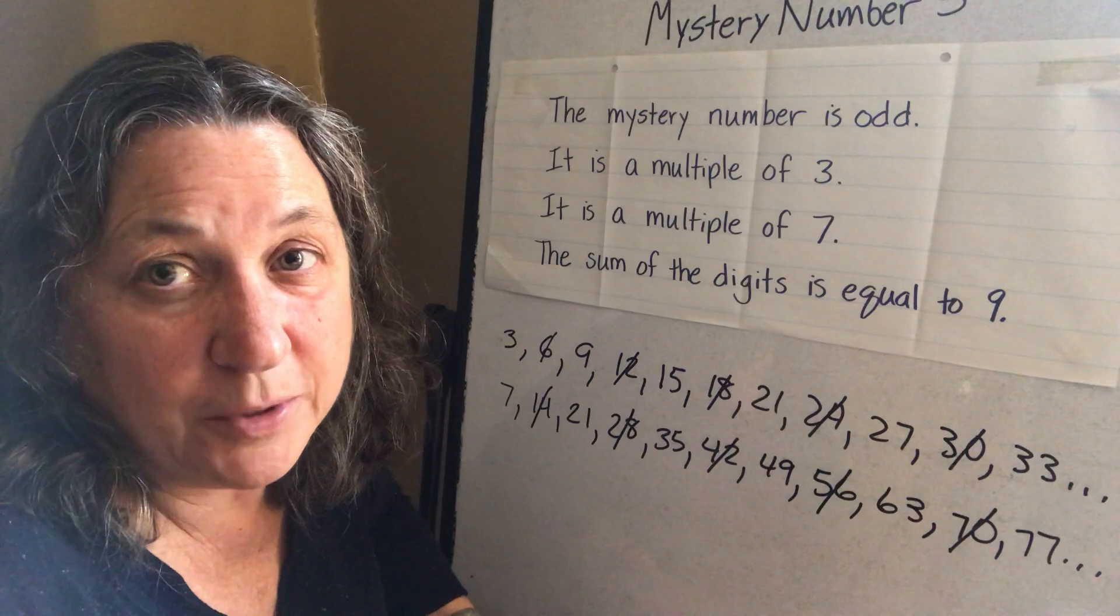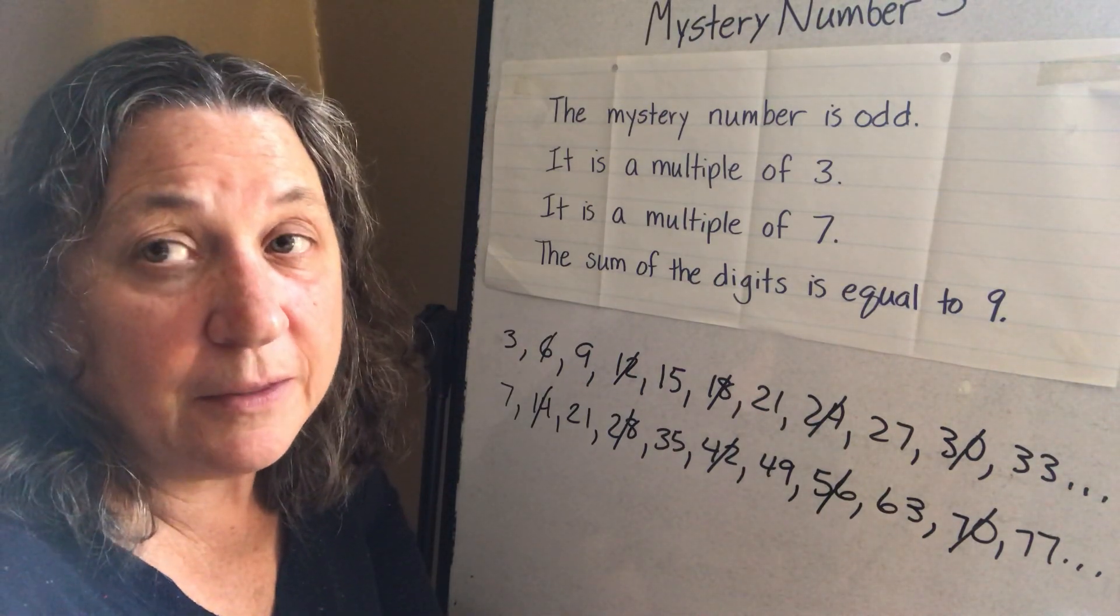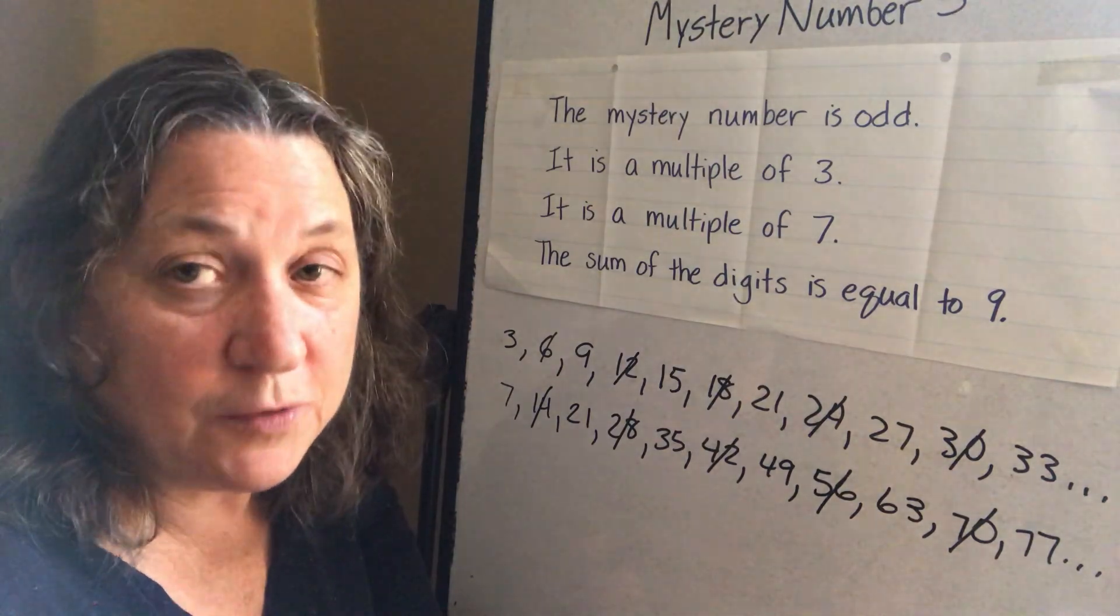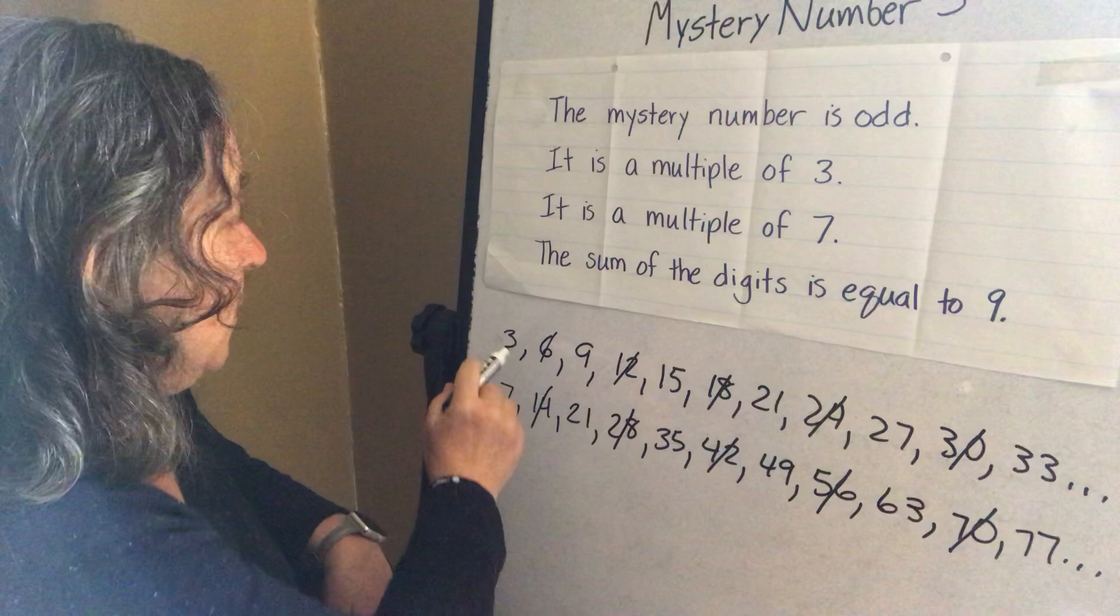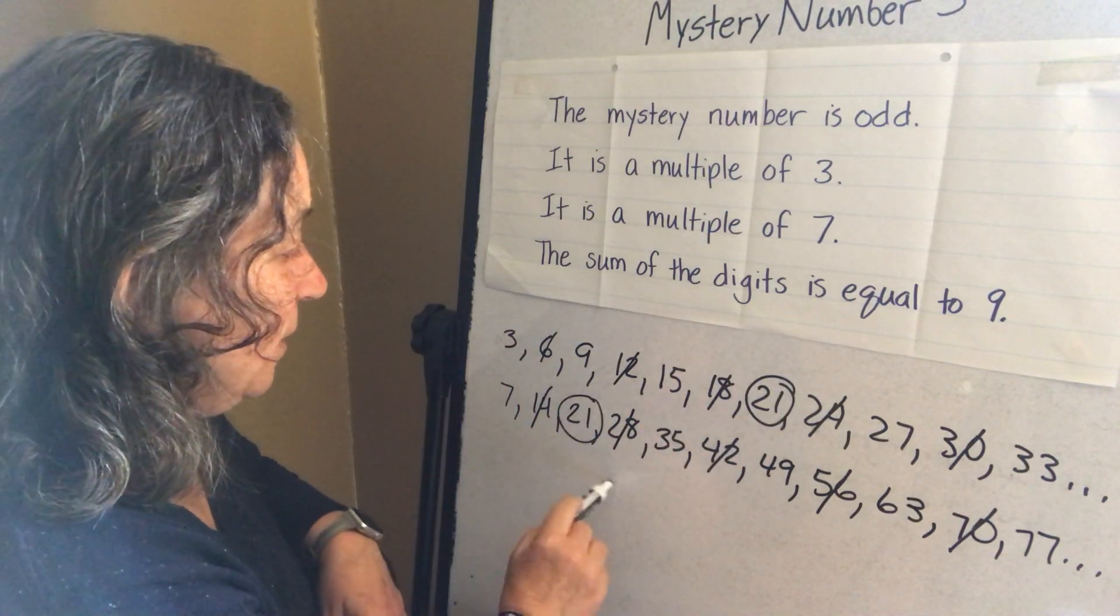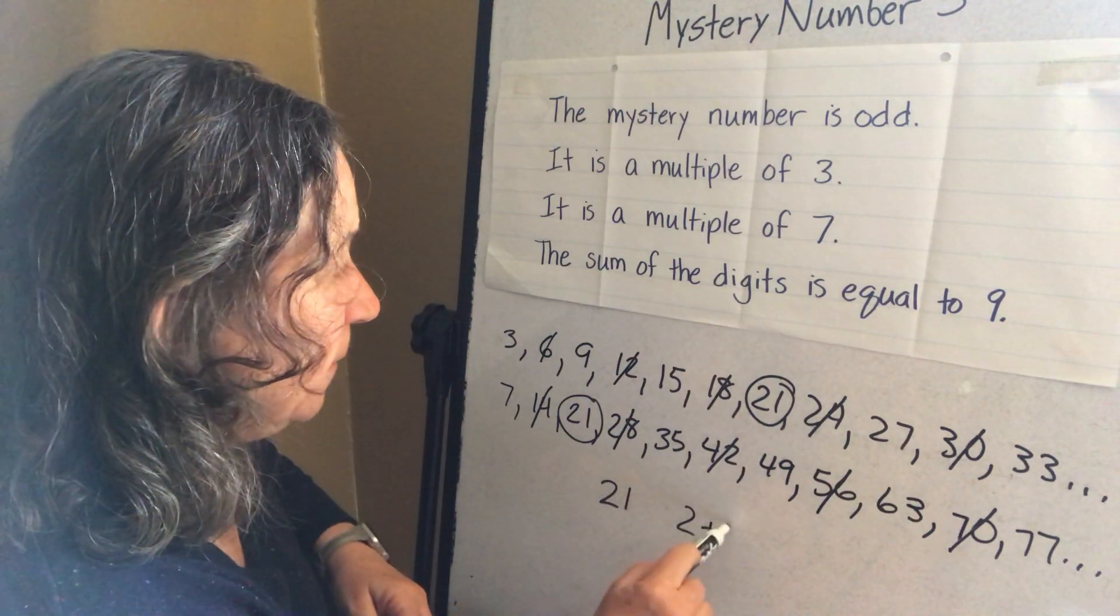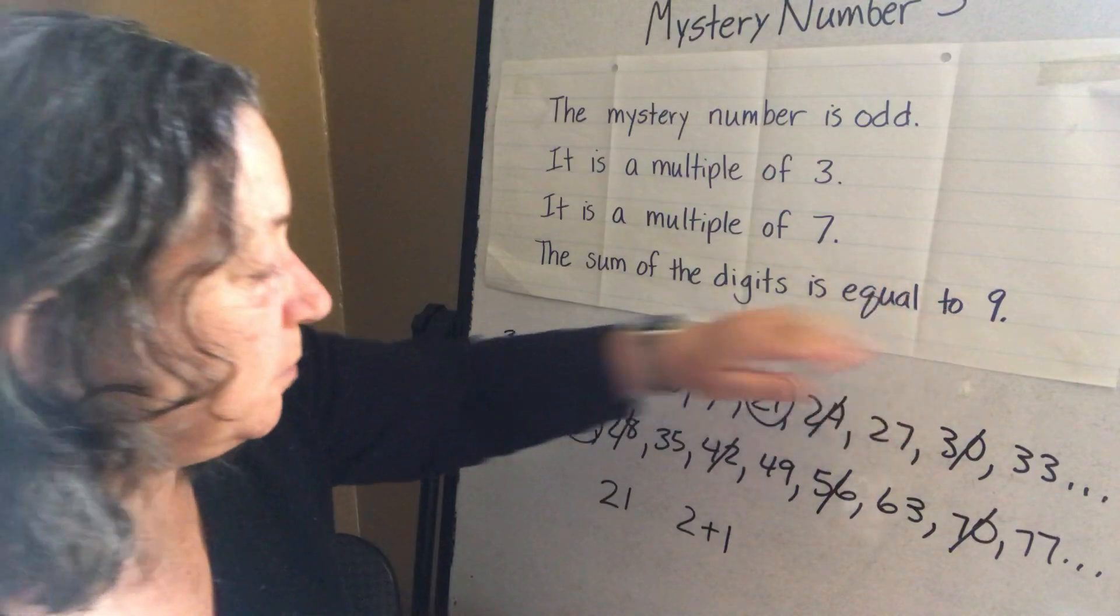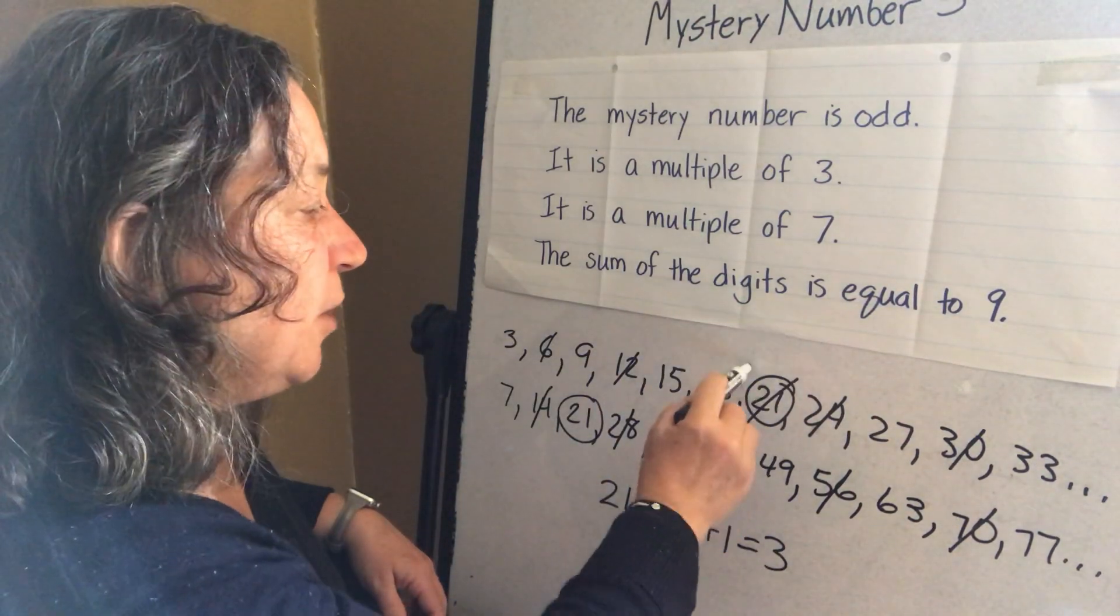Okay, so I've crossed off all the odd numbers and I have a list of numbers but I need to find a number that's in the multiples of three and the multiples of seven so I'm going to look for a number like that. Let's see. I see that the number 21 is in both lists. 21. But when I add two plus one, the sum of the digits equals three. So that is not the number.